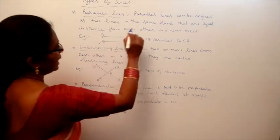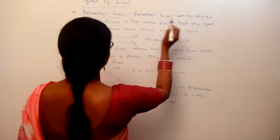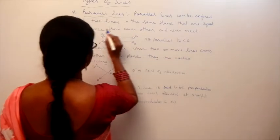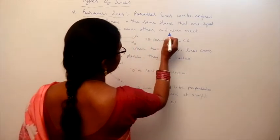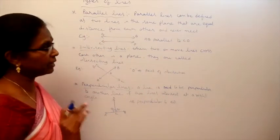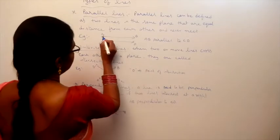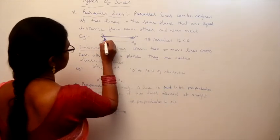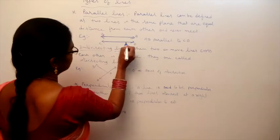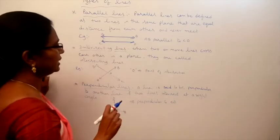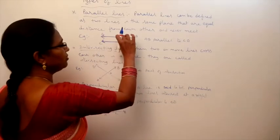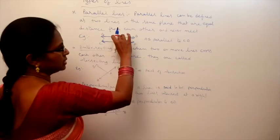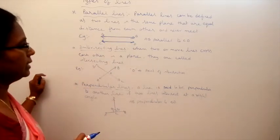What are parallel lines? Parallel lines can be defined as two lines in the same plane that are at equal distance from each other and never meet. Suppose line AB and line CD — if you take the distance between the two lines at any point and it is equal, and they never meet, those are called parallel lines.